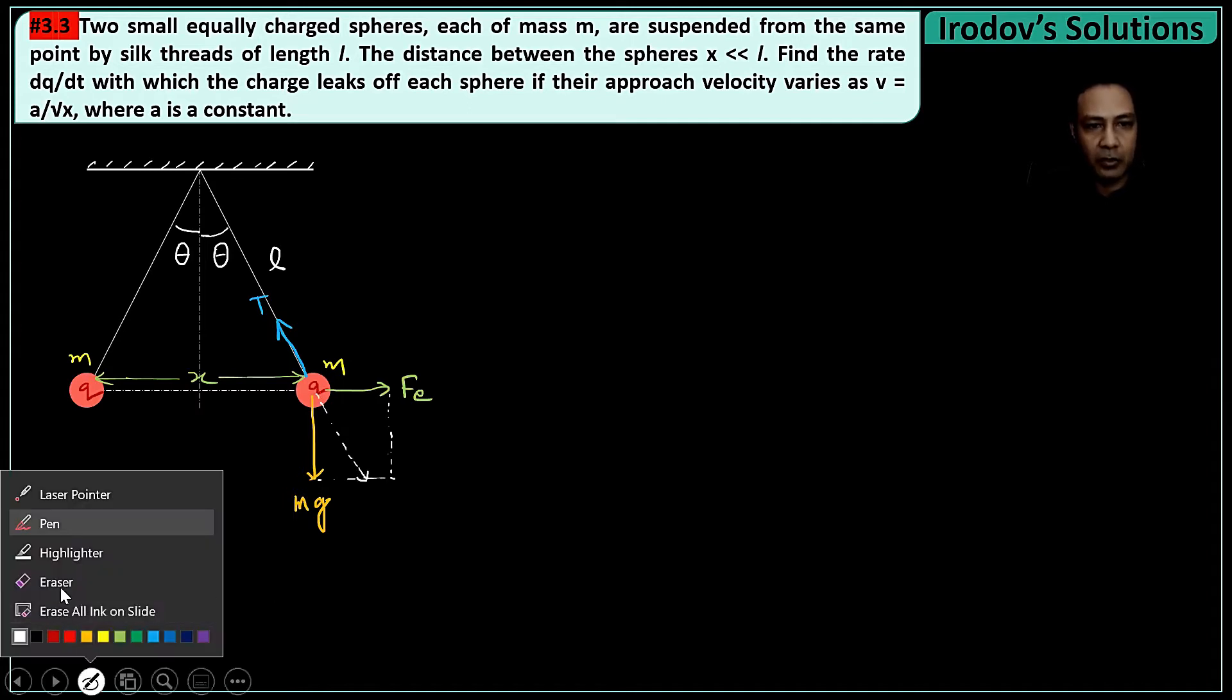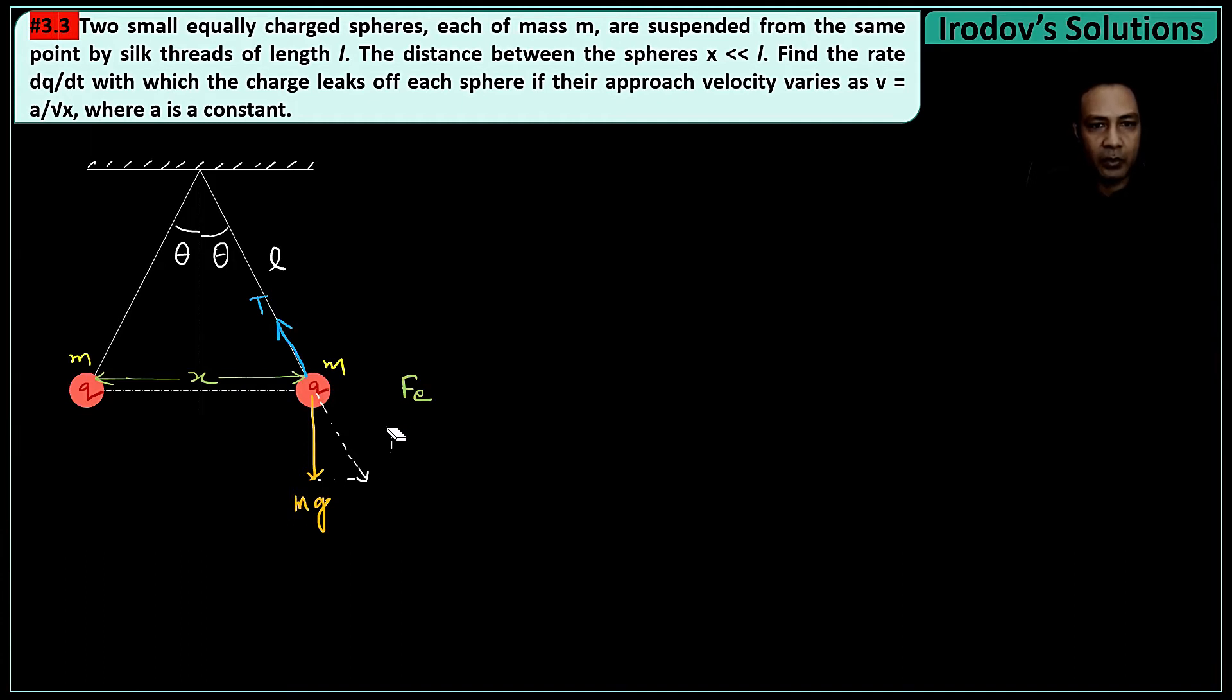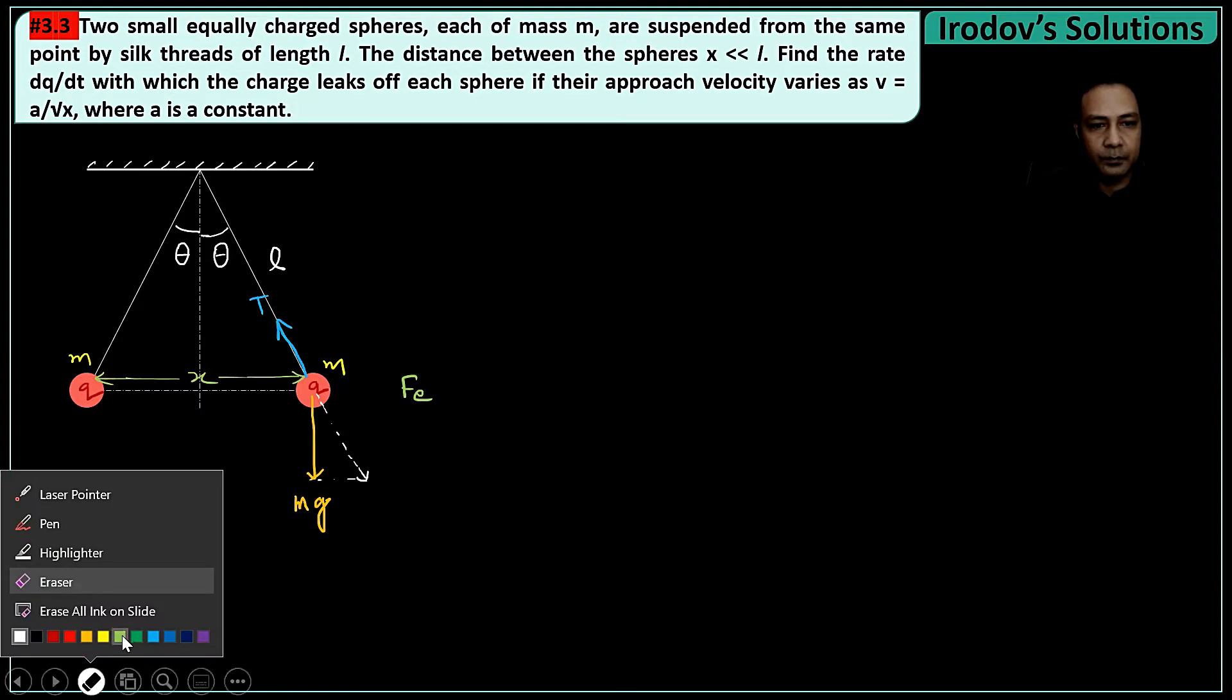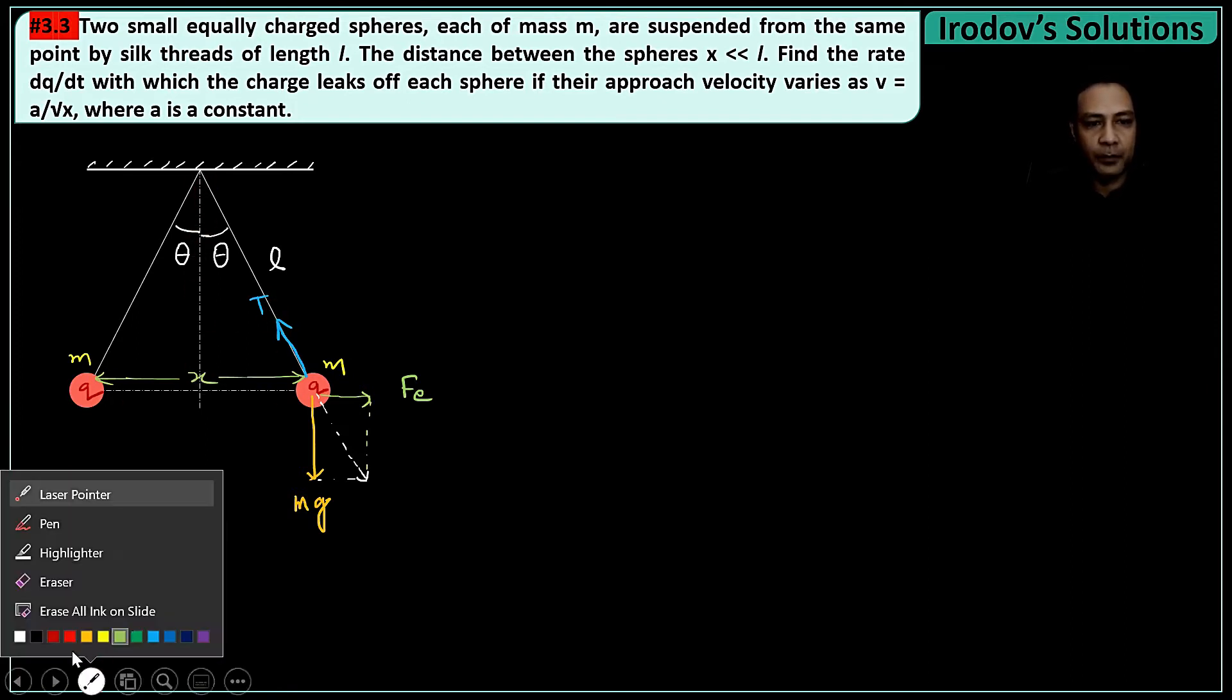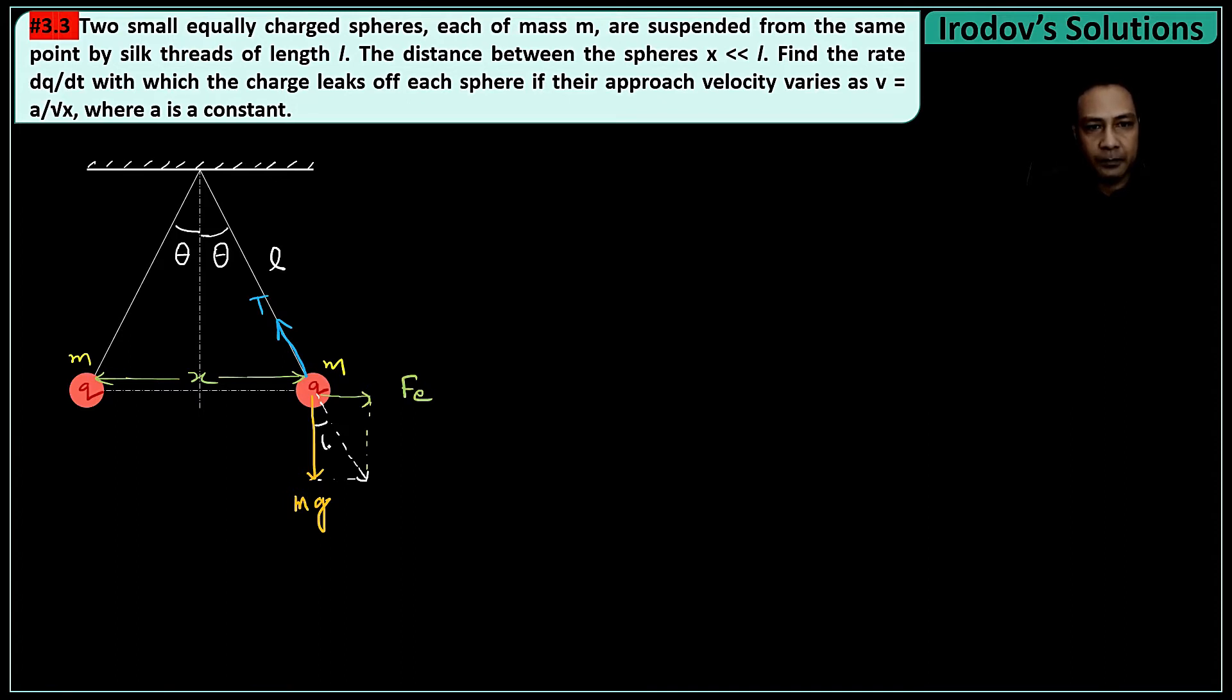So the resultant will be just opposite to tension. If I draw a vector diagram, this white dotted line is just opposite to tension. Suppose this string makes an angle θ with the vertical. So from here I can write tan θ = Fe/mg, or Fe = mg tan θ.